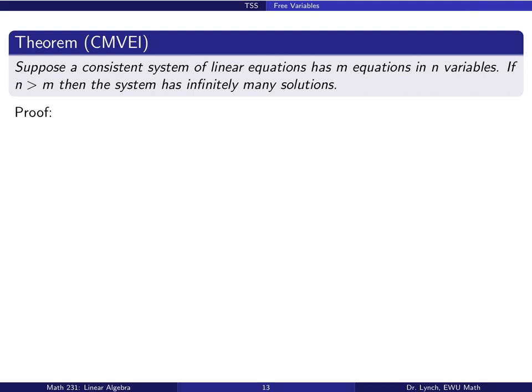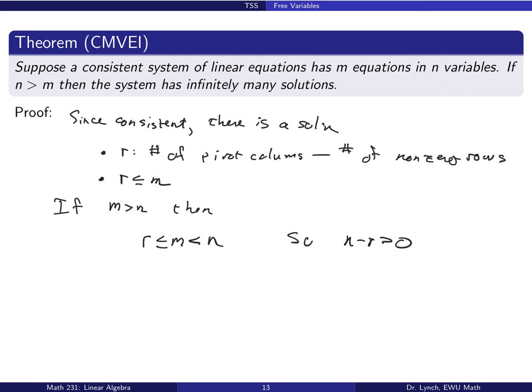One final theorem to close: if we have a consistent system of m equations and n variables where n is greater than m, our system always has infinitely many solutions. The proof: R is the number of pivot columns, also the number of non-zero rows, so R is less than or equal to m. Since n is greater than m and m is greater than or equal to r, we get n greater than r, so n minus r is greater than zero. There are free variables, and therefore infinitely many solutions.